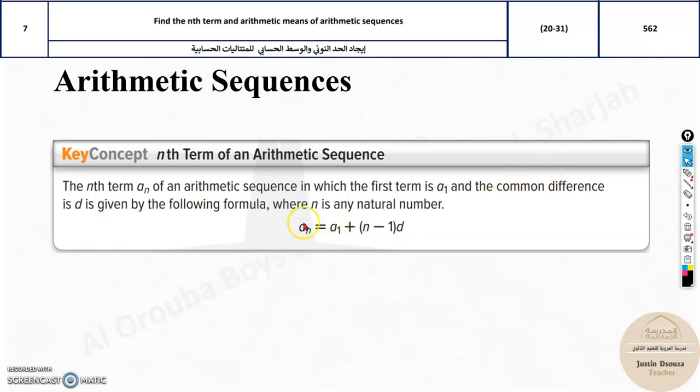Just remember this nth term, a_n formula. It's the first term plus n minus 1 depends on the n value and times the common difference.